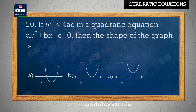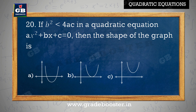If b square less than 4ac in a quadratic equation ax square plus bx plus c equal to 0, then the shape of the graph is — yadi quadratic equation ax square plus bx plus c equal to 0 mein b square less than 4ac, to graph ka aakar hota hai.